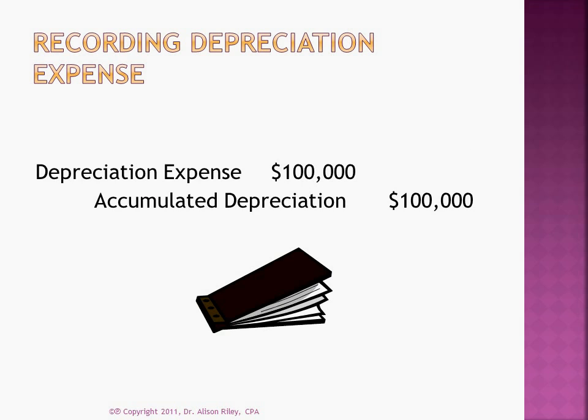Here we see the journal entry to record the example just discussed. The expense account, depreciation expense, is debited and a contra asset account, accumulated depreciation, is credited. The significance of this journal entry is that it allows us to recognise only part of the asset cost in the current accounting period. The rest will be recognised in subsequent accounting periods.